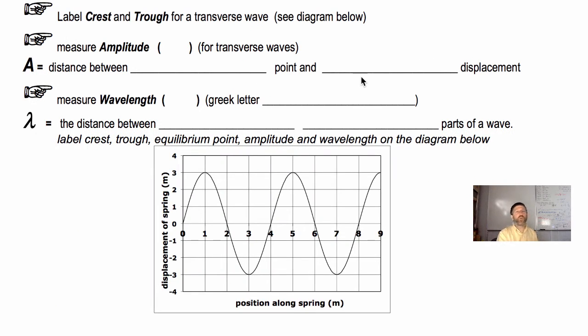The next little section here is we're going to label some parts of a wave. We're going to label the crest and the trough for a transverse wave. We'll learn what transverse wave is momentarily, but the crest, it does make sense right here. It's the top of that little hill. That is the crest. Let's go ahead and label that crest.